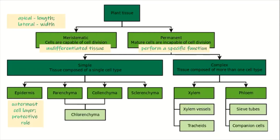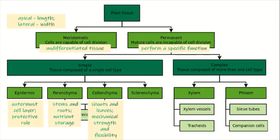Next, we have the parenchyma and the collenchyma. The parenchyma is located at the stems and roots of your plant and its main function is for the storage of nutrients. The collenchyma is found in shoots and leaves and is responsible for the mechanical strength and flexibility of the plant. Another simple tissue is the sclerenchyma, which is responsible for mechanical strength and also aids in water conduction.